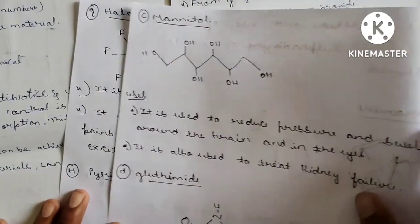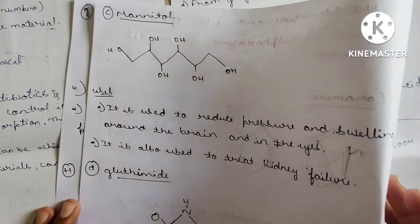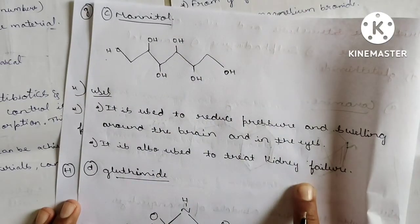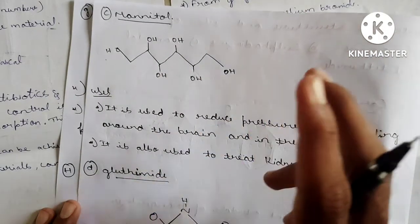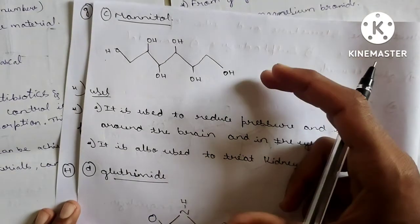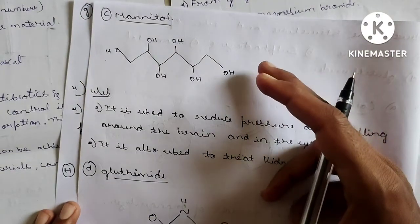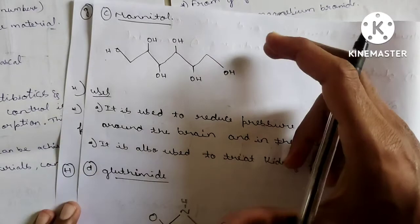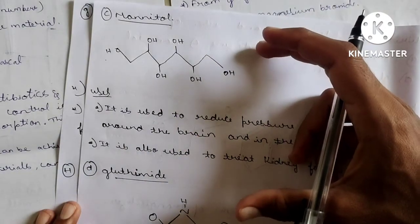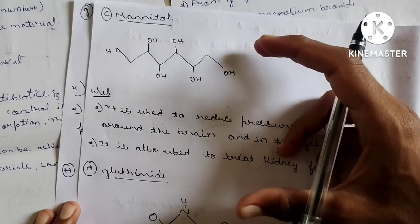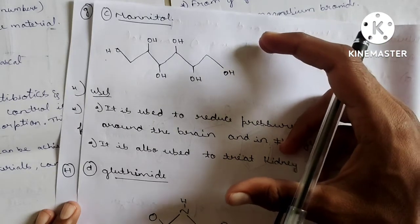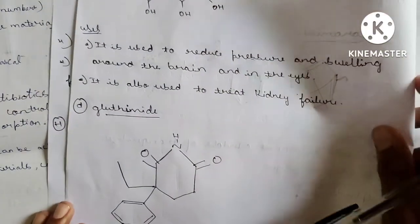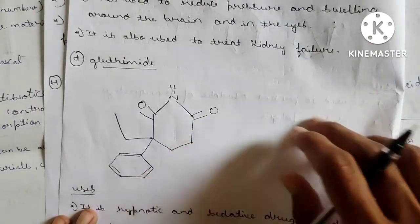Mannitol: Used to reduce pressure and swelling around the brain and in the eyes, and to treat kidney failure. It is available as a 100 ml injectable — similar packaging to normal saline bottles. These are injectables. Glutethimide: A hypnotic and sedative drug used to treat insomnia. Structures are complex — practice them.